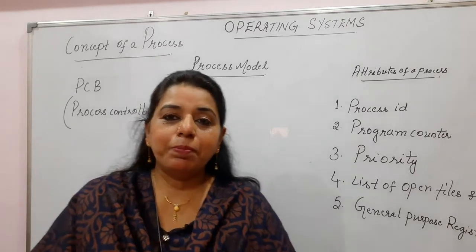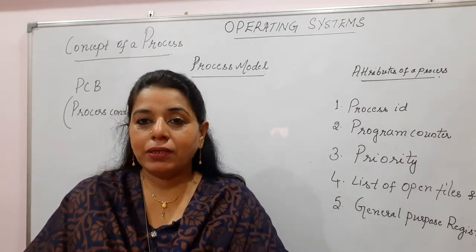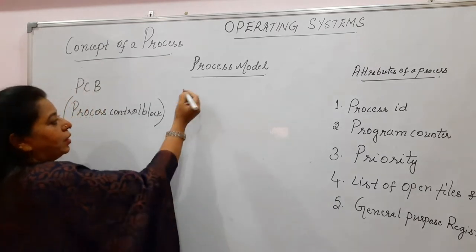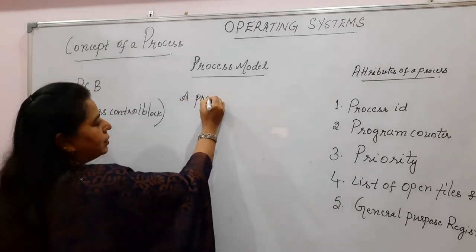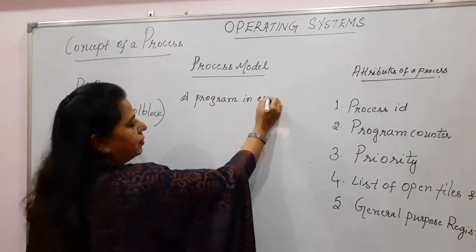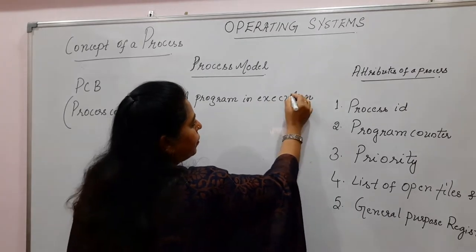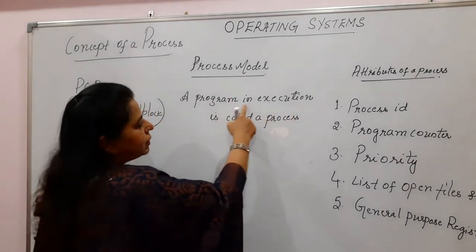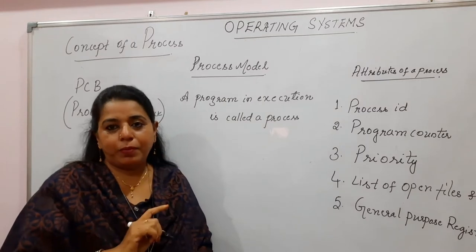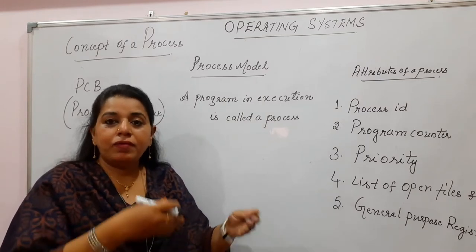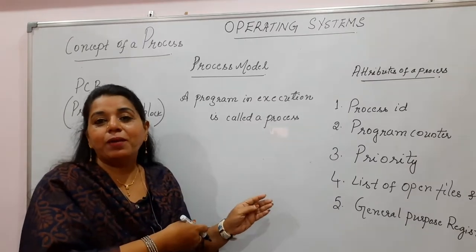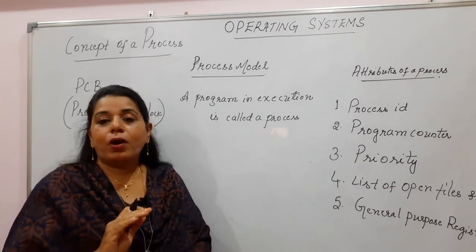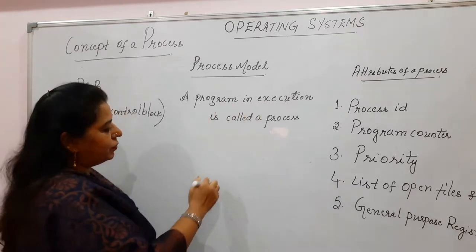To understand the concept of a process in simple terms, let's start with the program. The simplest definition is: a program in execution is called a process. When does a program get executed? When it is in the main memory. So a program in secondary memory is moved into the primary memory — the RAM — and from there the CPU accesses it to execute that program.